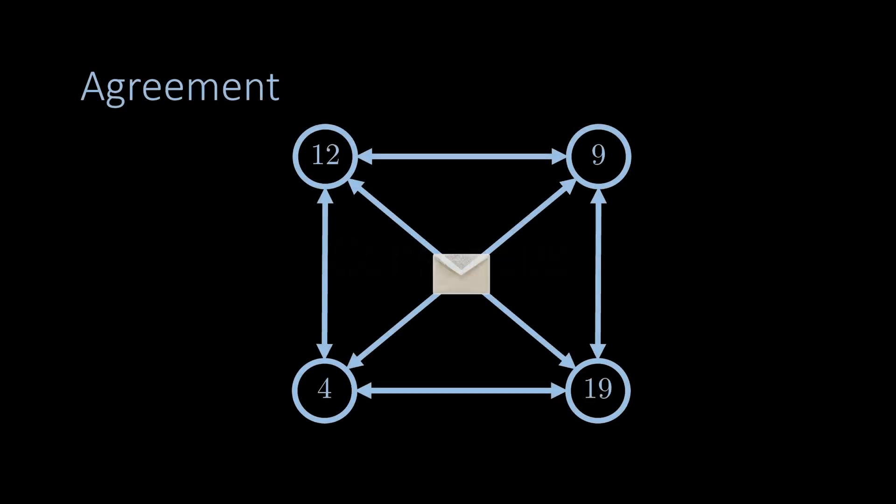Let's start by defining the consensus problem more formally. We say that an algorithm solves the consensus problem if it has the following three properties. The first property is called agreement, which says that all nodes must decide on the same value whenever they decide.